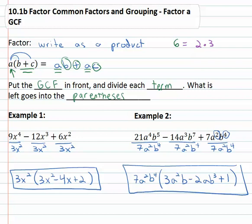So we have our final factored expression. We factored out the GCF so we have 7a squared b to the fourth times 3a squared b minus 2ab cubed plus 1. Factoring a common factor means we put the GCF out front and divide each term by the GCF. What's left goes in the parentheses.